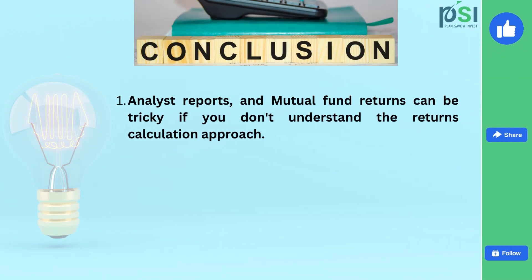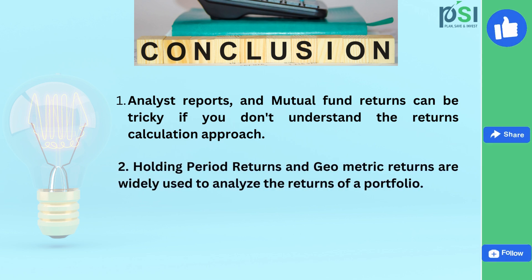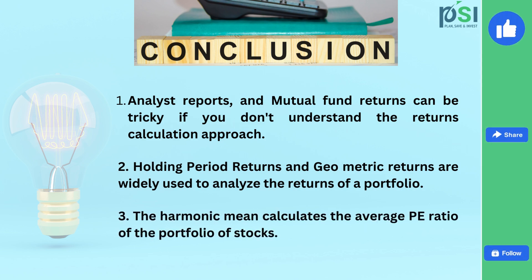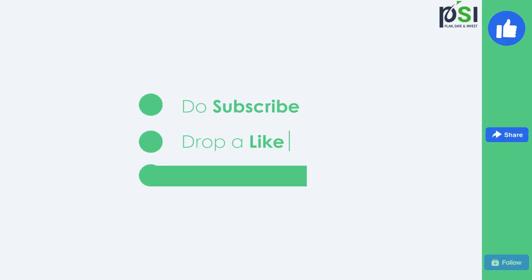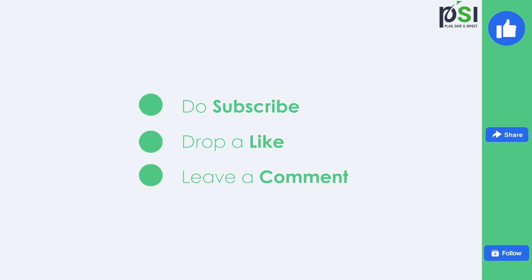To conclude: analyst reports and mutual fund returns can be tricky if you don't understand the returns calculation. Holding period returns and geometric returns are widely used to analyze the returns of a portfolio. Harmonic mean calculates the average PE ratio of a portfolio of stocks. If you have any queries, please ask them in the comment section. Please like, share and subscribe to our channel. Thank you.